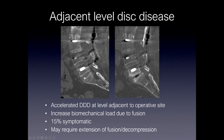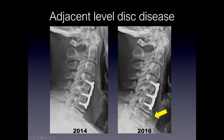Adjacent level disc disease or adjacent segment degeneration is defined as accelerated degenerative disc disease at the level adjacent to the operative site. It's due to an increase in biomechanical load from fusion — when you fuse several levels, the level above or below can undergo further degeneration. In this example, there's a multilevel fusion, and eventually more motion at the adjacent segment results in vacuum disc phenomenon, further subluxation, and endplate sclerosis — advanced degeneration as a result of the fusion. 50% of these can be symptomatic and may require extension of the fusion or decompression. Here, in 2014, the patient had a multilevel ACDF, and arthritic changes at an adjacent level significantly progressed by 2016 due to adjacent level disease.